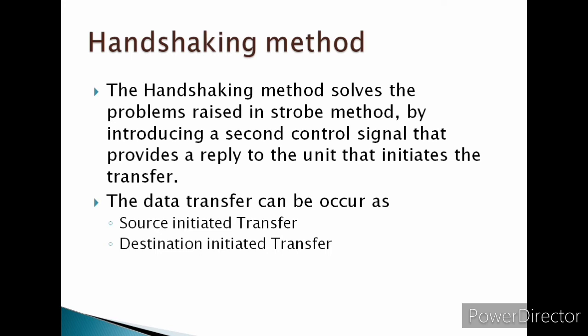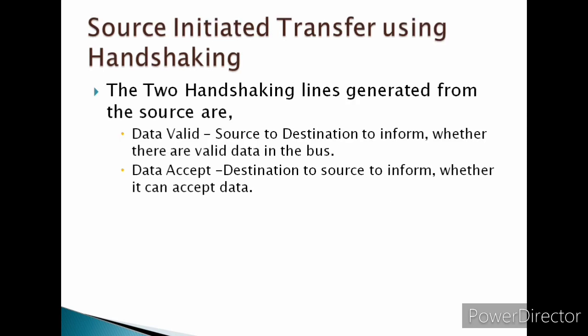Let us see about source-initiated transfer using the handshaking method. The two handshaking signals generated from the source are data valid and data accept. Data valid is generated at the source to the destination to inform whether there is valid data on the bus. Data accept is generated at the destination side to inform whether it can accept data.